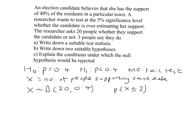Using a Casio FX-991 calculator, go to the menu, choose number 7 for distributions, scroll down to binomial cumulative distribution on the second screen at number 1, press 2 for variable, and enter x = 3, n = 20, and probability = 0.4. The probability of getting less than or equal to 3 is 0.01596.